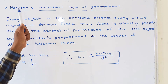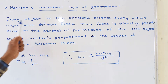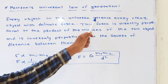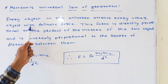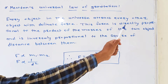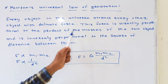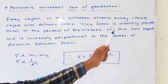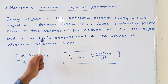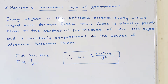Newton's Universal Law of Gravitation states that every object in the universe attracts every other object with a definite force. This force is directly proportional to the product of their masses of the two objects and is inversely proportional to the square of the distance between them.